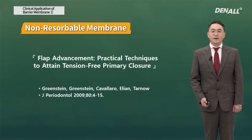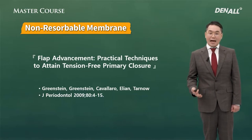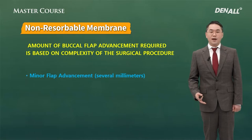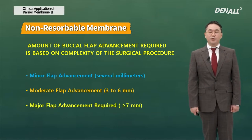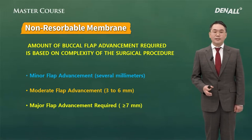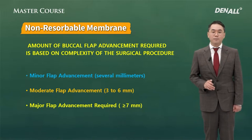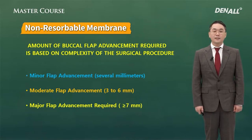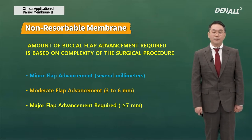There is a very good paper I'd like to introduce briefly — on the flap advancement technique. How much you advance the flap can be a factor. There are three levels: minor flap advancement of 2 to 3 mm, moderate flap advancement of 3 to 6 mm, or major flap advancement of more than 7 mm. As said before, the PTFE membrane is indicated when you need to augment the overall alveolar bone volume, where soft tissue primary closure is difficult. So when you use a PTFE membrane, moderate or major flap advancement of 3 to 6 mm or more is required.